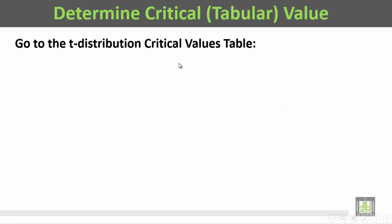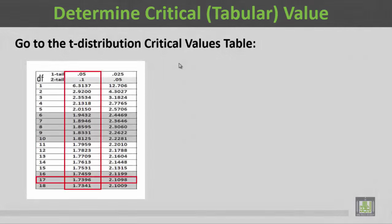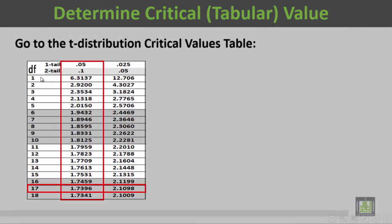It looks like this: we have the first column showing the degrees of freedom, and the first row is divided into two parts. The upper part is for one-tail tests, and the lower part, the shaded one, is for two-tail tests.